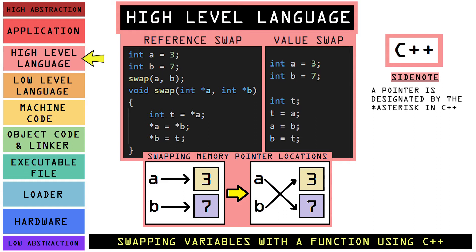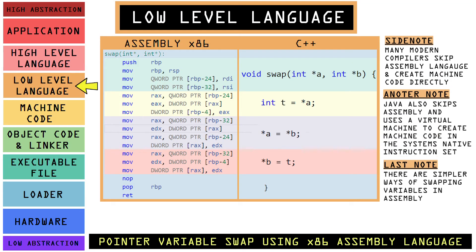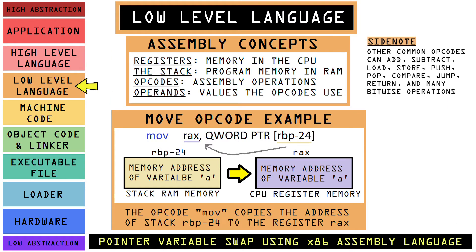Once we compile our C++ it will generate assembly language code, moving us down to the next level. Let's take a look at swapping variables with the low level language of assembly x86. The big ideas that relate to our swapping function in C++ is we are moving data from one memory location on the stack in RAM to registers in the CPU. Anytime you see square brackets in assembly, that is like our pointers and they are referring to a memory address. Assembly takes a lot more lines of code to accomplish the same goal.